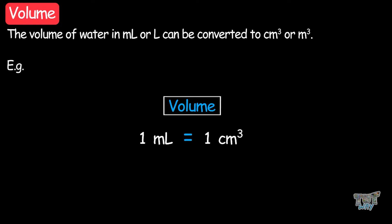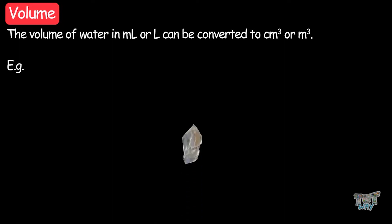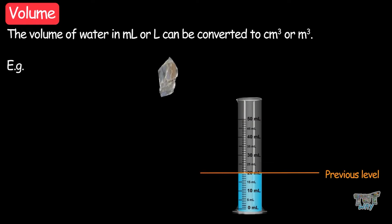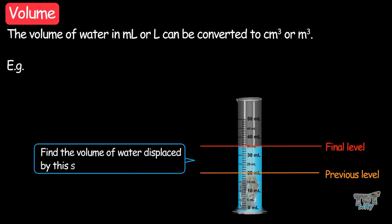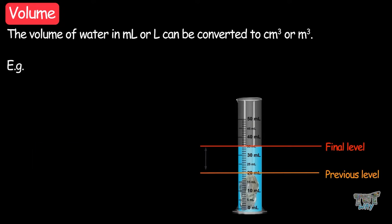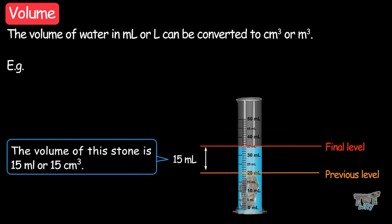The volume of water measured in milliliters or liters can then be converted to cubic centimeters or cubic meters. For example, if the volume comes out to be one milliliter, its volume is one cubic centimeter. Here we have another example: we have to measure the volume of a stone. We have a graduated beaker filled with water. Now dip the stone into the water and read the graduated beaker to find out the volume of water displaced by the stone. It is about 1.5 milliliters, so the volume of the stone is 1.5 milliliters or 1.5 cubic centimeters.